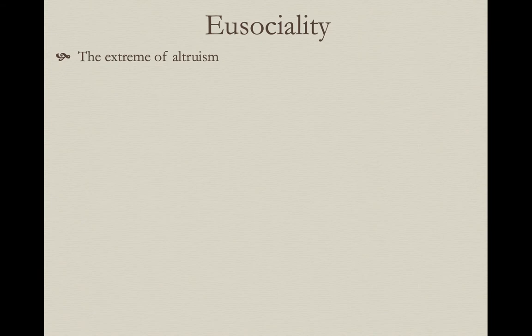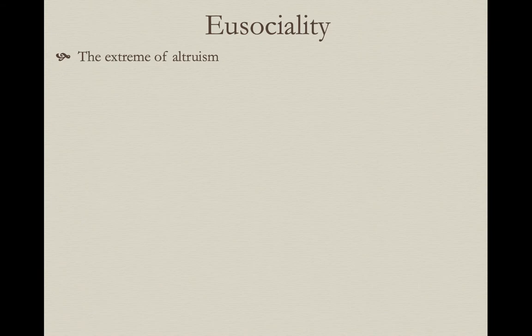Eusociality is basically just an extreme version of altruism, and it requires several preconditions. The first is there has to be overlap of generations. There has to be cooperative brood care — helping, as we've talked about in the past. This really is no different from the other examples of altruism we've talked about previously, in which individuals were helpers helping close relatives raise their brothers and sisters.